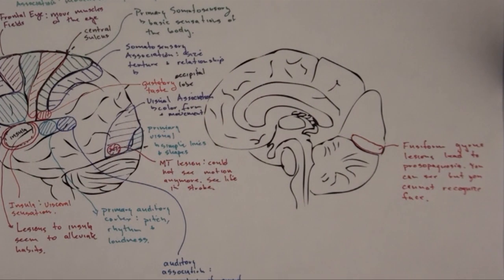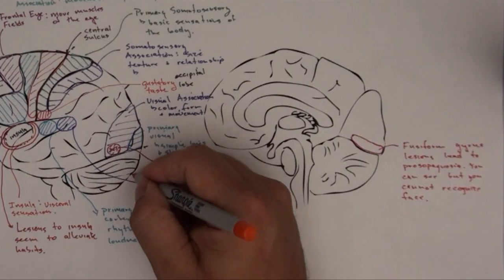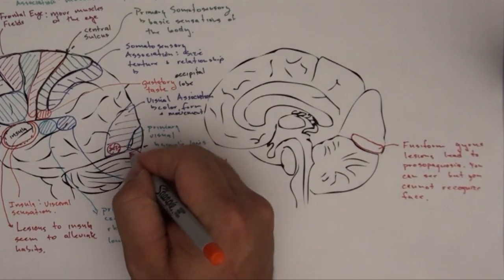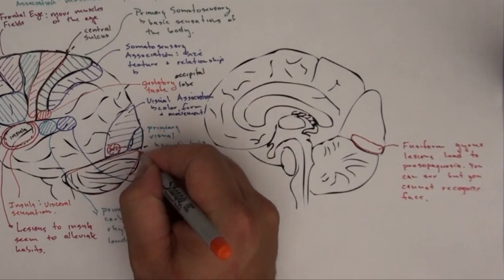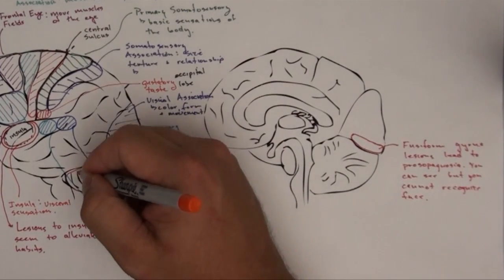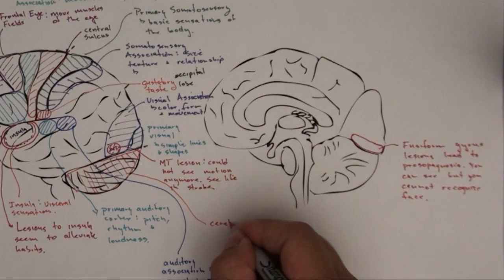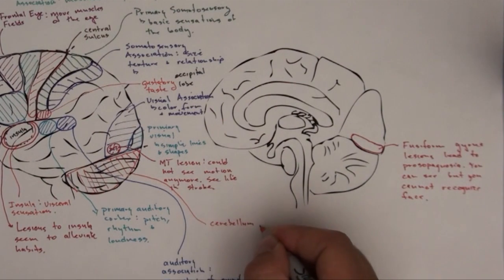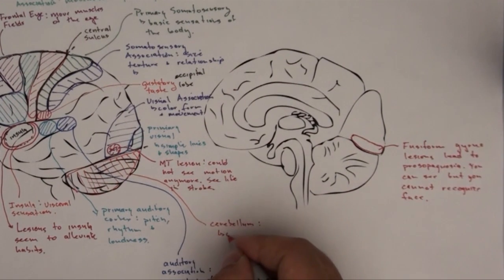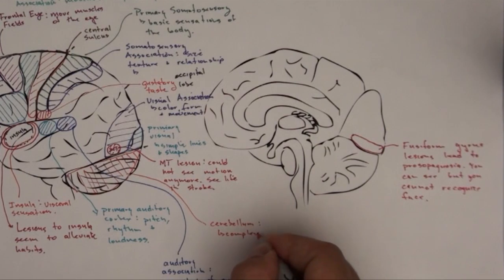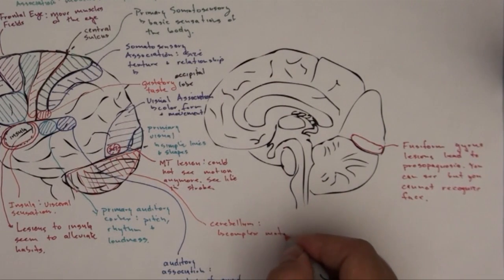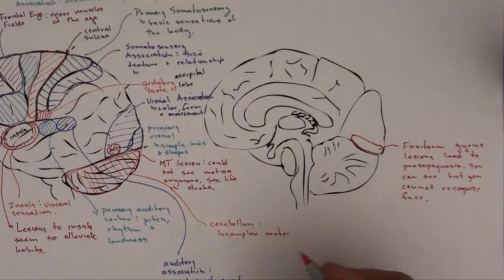I think I've got one more thing over on this side. I've got the cerebellum. The cerebellum does complex motor behavior - hitting a golf ball, hitting a two-handed backhand, riding a bike.